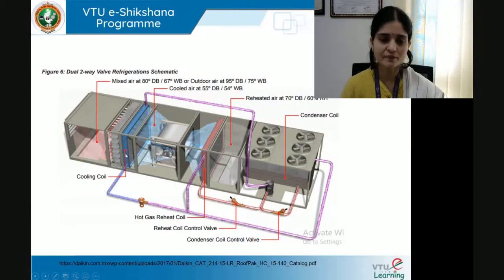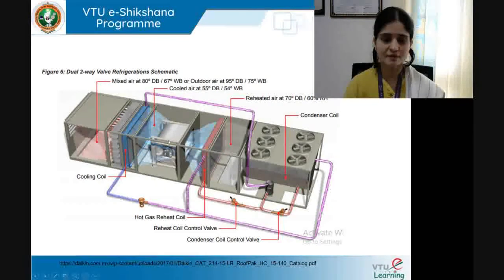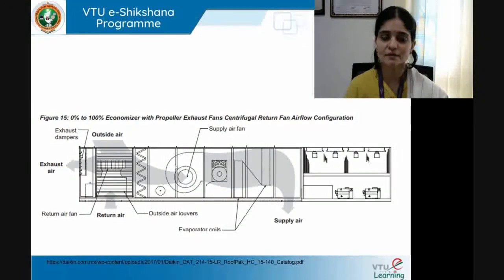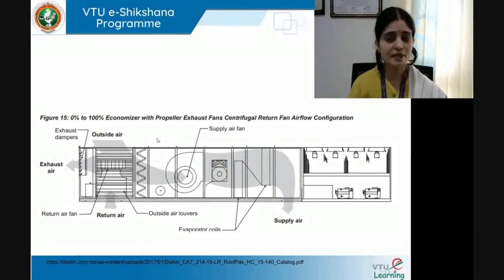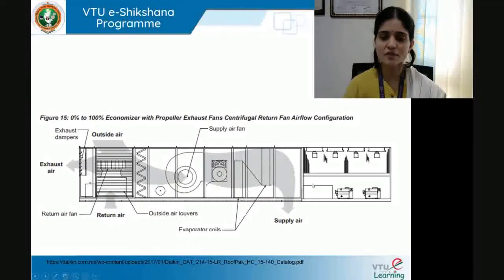Looking at the cooling coil on the left, the filter is positioned just before it — air passes through the screens, gets cleaned, and enters the coil. The red mixed air turns to cold air. A sectional elevation can be drawn and labeled with the parts: exhaust dampers, exhausted air, influx of outside air, return air, and outside air mixing in the chamber, then passing through louvers and evaporative coils, with supply air coming back out.